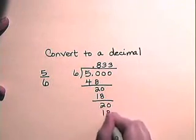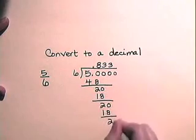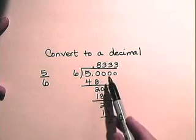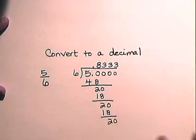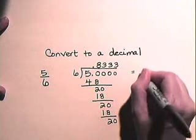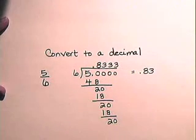Add another zero. 3 times 6 is 18. Subtract. We obtain 20. Add another zero. And you will see that this is a repeating decimal. And so, if we want this fraction written to a decimal to two decimal places, we will see that this is .83 or 83 hundredths.